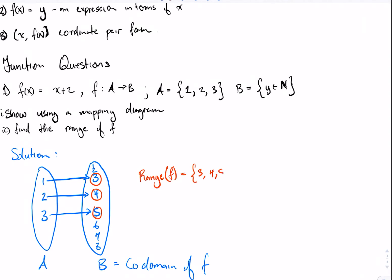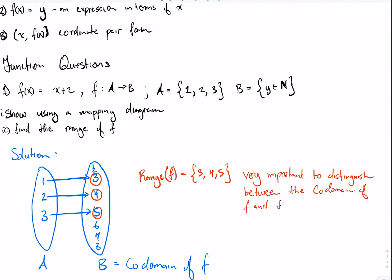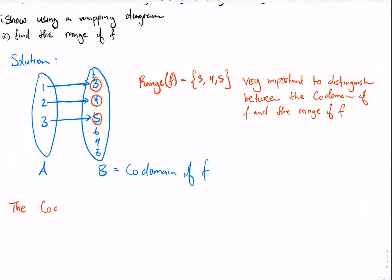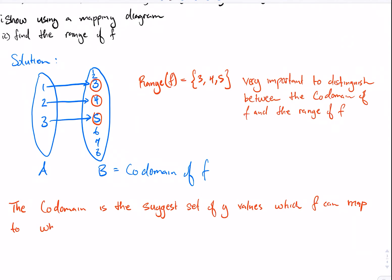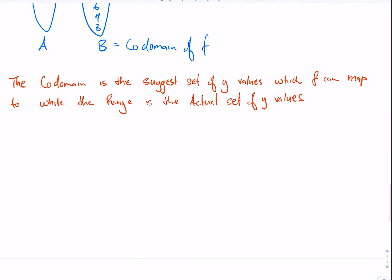So the range of F is the set {3, 4, 5}. It is important to distinguish between the codomain of F and the range of F. The codomain is the set of natural numbers — {1, 2, 3, 4, 5, 6, 7, 8, ...} up to infinity — but the codomain is not equal to the range in this case. The codomain is the suggested set of Y values which F can map onto, while the range is the actual values that F is mapping onto.